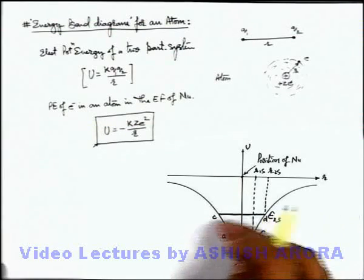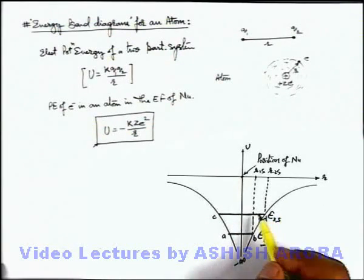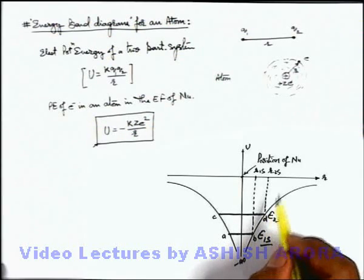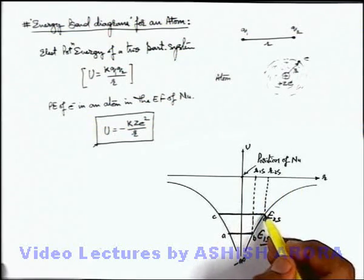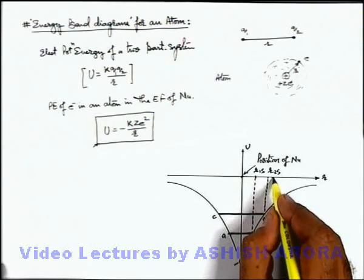And we are drawing it on a two-dimensional curve but it implies that anywhere in the three-dimensional space in the surrounding of nucleus electron can move in the range from c to d in other direction up to a distance r 2s.